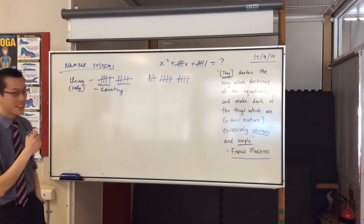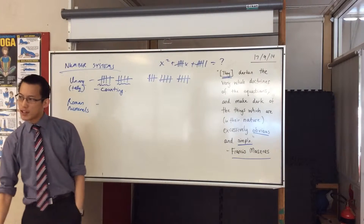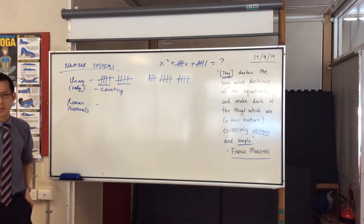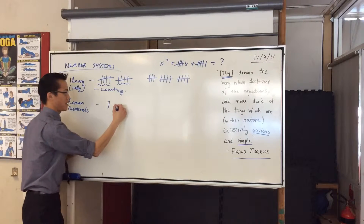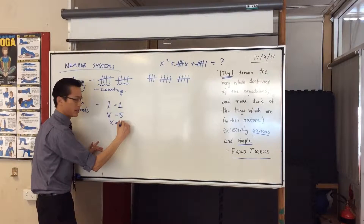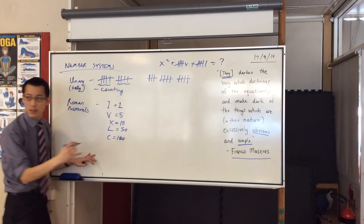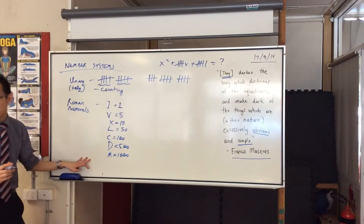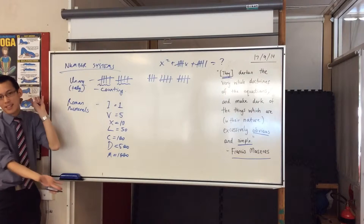Along come the Romans, and they decide they can improve on this. We're going to have Roman numerals. What do Roman numerals do better? The Roman numerals are: I for 1, V for 5, X for 10, L for 50, C for 100, D for 500, and M for 1,000. You can even put a line on top for larger values. But basically, that's the basics.